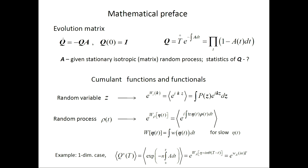The preface concerns the time exponentials of random matrices, which are the formal solutions to a linear equation. The equation is linear, but these are matrices, so they do not commute. The matrix A is assumed to be a given stationary isotropic random process with given statistics, and the question is how to find the statistics of Q.